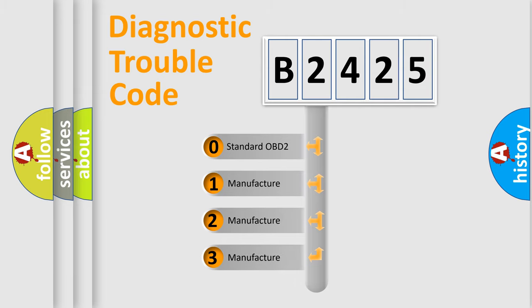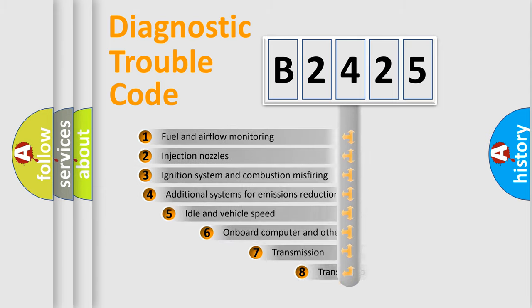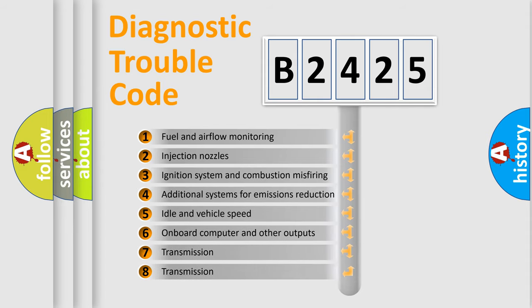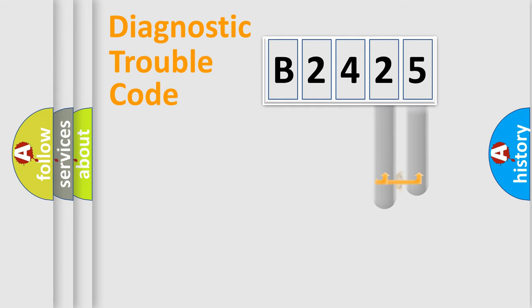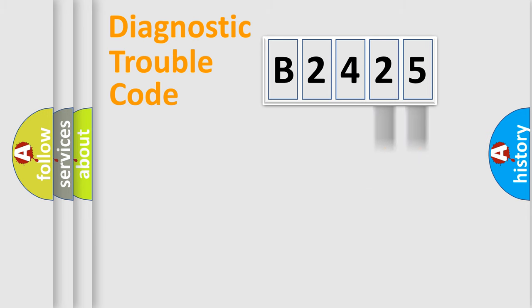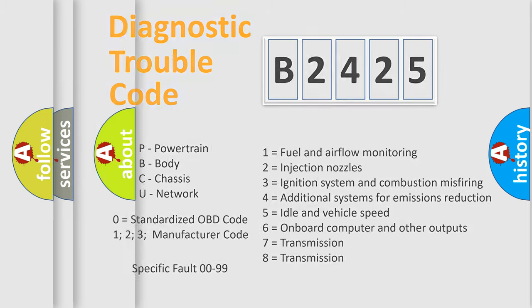If the second character is expressed as zero, it is a standardized error. In the case of numbers 1, 2, or 3, it is a more specific expression of a car-specific error. The third character specifies a subset of errors. The distribution shown is valid only for the standardized DTC code, and only if the second character code is expressed by the number zero.